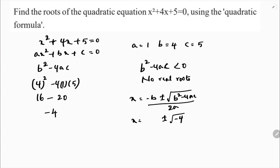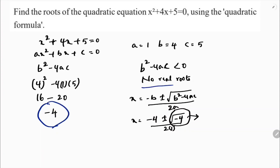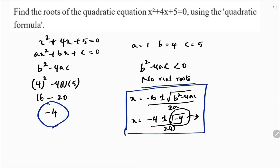With b equal to 4, it becomes minus 4 plus or minus the square root of negative 4, divided by 2 times 1. Since the value inside the root is negative, it is an imaginary value. You can end the problem here — if the discriminant is negative, there are no real roots, so no need to continue with the formula.